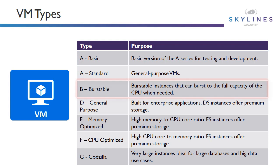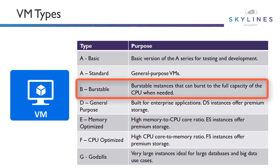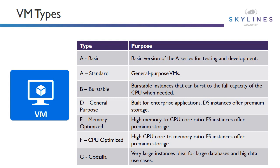Then we get on to B, which I remember as B for burstable. These instances can burst to the full capacity of the CPU when needed, but you get a discount because you're not using the machine a lot of the time. It stores CPU credits, and when it has to consume CPU it can use those credits and use the full capacity of the CPU. If you're going to use the CPU continuously it obviously won't make sense, as you won't store any credits and you'll get worse performance. But it's a very cost-effective option — I highly encourage people to use them during labs.